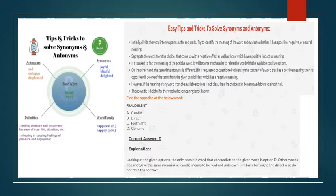Now let's see some more tricks. Initially, divide the word into two parts: suffix and prefix. In the case of happy word, unhappy has prefix 'un', and happiness has suffix 'ness'. Remember the prefix and suffix. Try to identify the meaning of the word and evaluate whether it has a positive, negative, or neutral meaning. If 'un' or 'dis' is there, it will be negative.